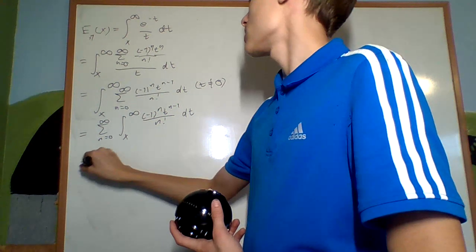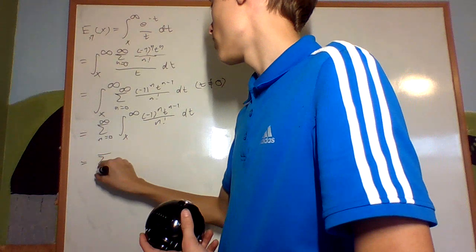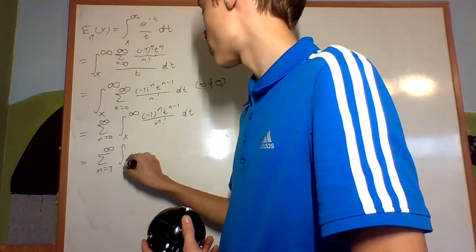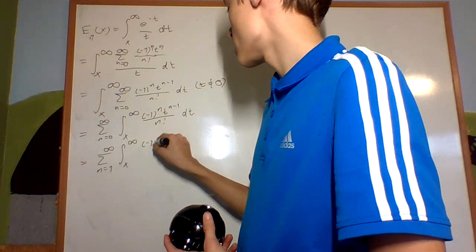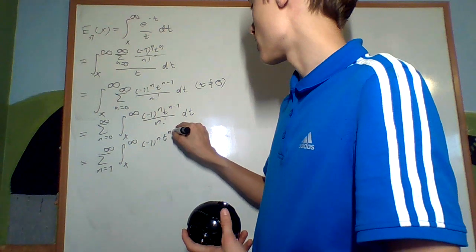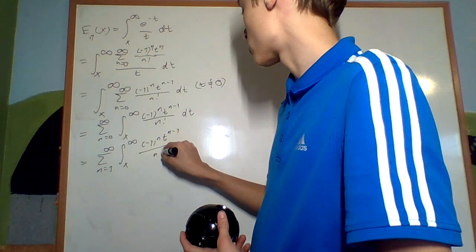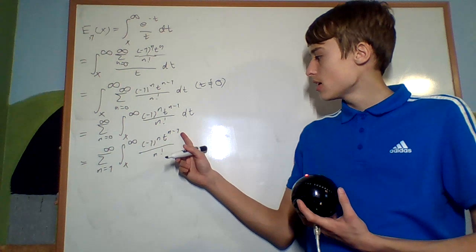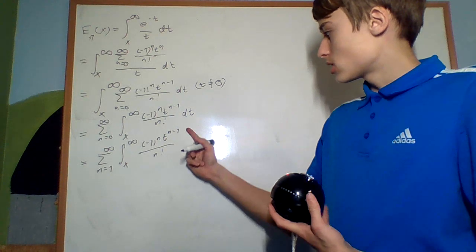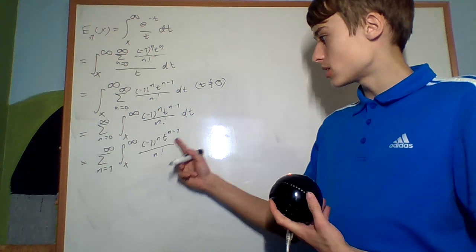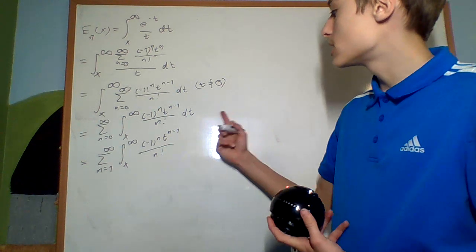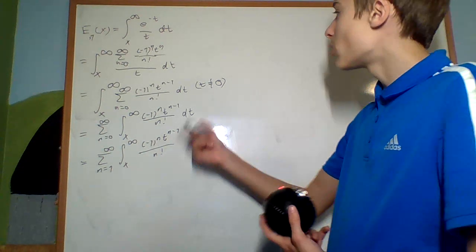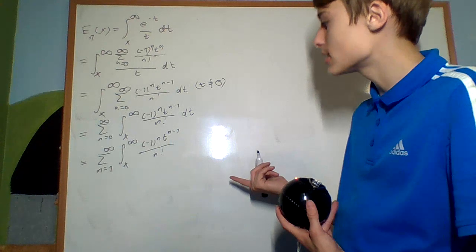And what I'm going to do is have the sum from n equals 1 until infinity of the integral from x until infinity of negative 1 to the n times t to the n minus 1 over n factorial. The reason I'm doing that is because now I can easily integrate this, since the terms become t to the 0, t to the 1, t to the 2 — all easy to integrate.